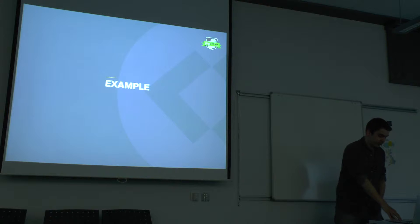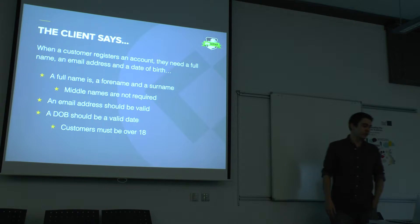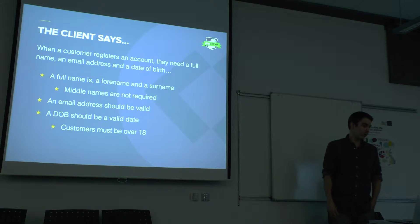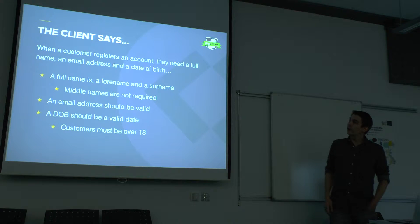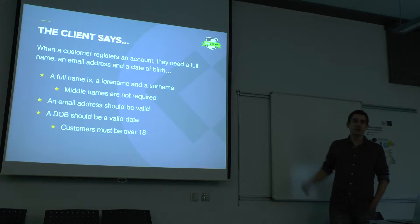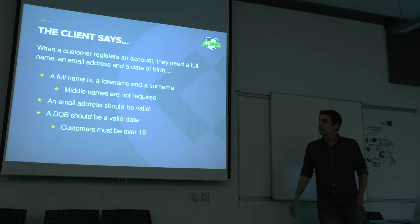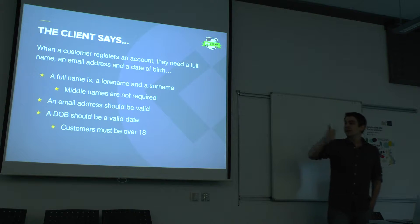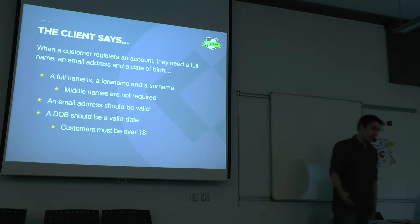Let's do an example. If a client says to us, when a customer registers an account, they need a full name, an email address and a date of birth — and we're going to use a banking account as an example — we'll expand that out a little bit. A full name is a forename and a surname, and for this example I'll use a middle name. An email address should be completely valid. A date of birth should be both a valid date and a customer needs to be over 18. These are the business rules when opening a new banking account.